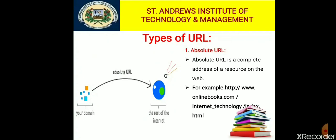For example: HTTP://www.onlinebooks.com/internet_technology/index.html — where HTTP is the protocol, onlinebooks.com is the server name, and index.html is the file name. An absolute URL is independent of any relationship with the rest. When you use an absolute URL, you point directly to the file and give the exact location of the file.